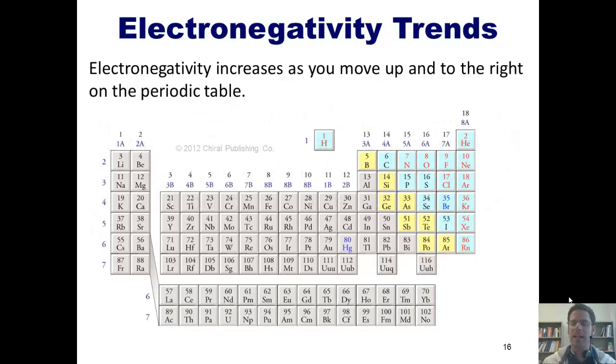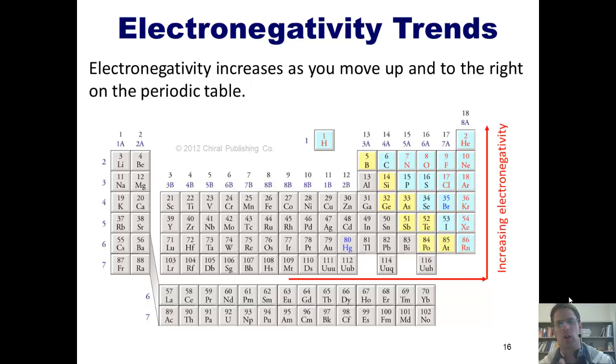As you should already know, electronegativity increases as you move up and to the right on the periodic table. Note that noble gases are excluded because they already have a full octet. They don't have a thirst for more electrons. Thus, the most electronegative element on the periodic table is fluorine, number 9, and the least electronegative is francium, number 87.